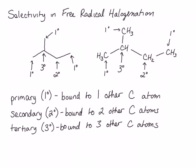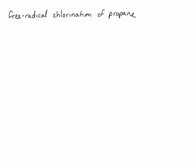Now that we've discussed how to differentiate between the different carbon atoms in a molecule, let's look at an example of a free radical halogenation reaction. We will start with free radical chlorination of propane. In propane, there are two different types of carbons where substitution can occur — substitution can occur at a primary carbon or a secondary carbon.